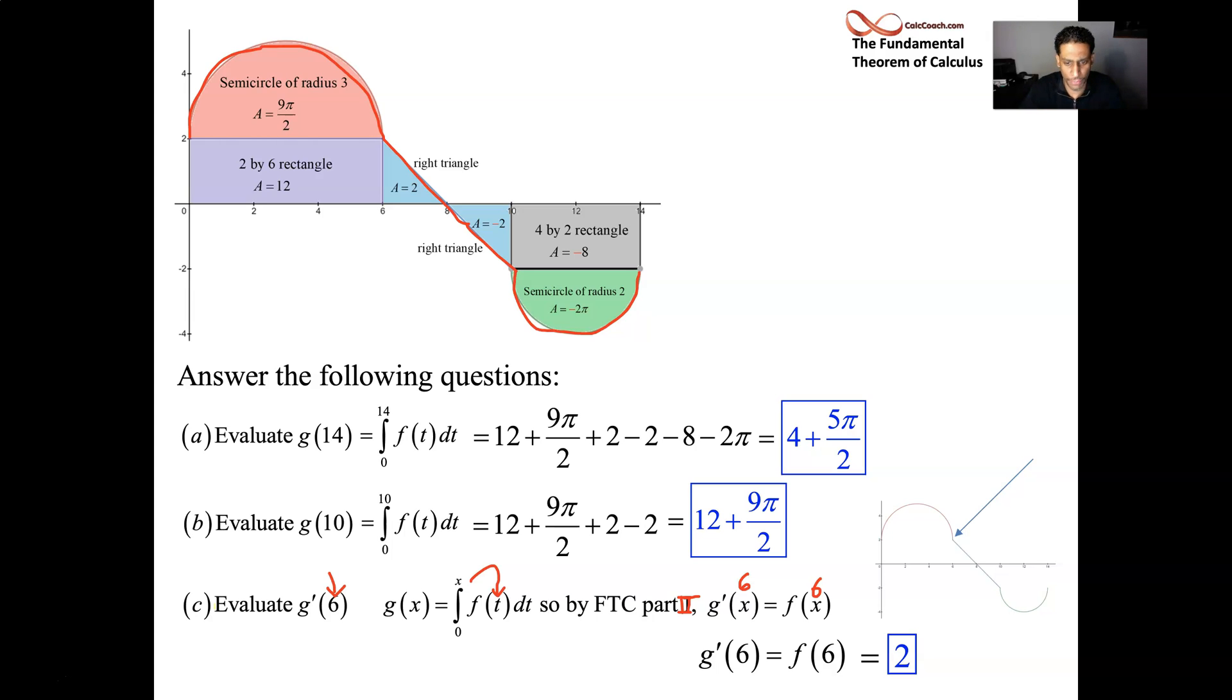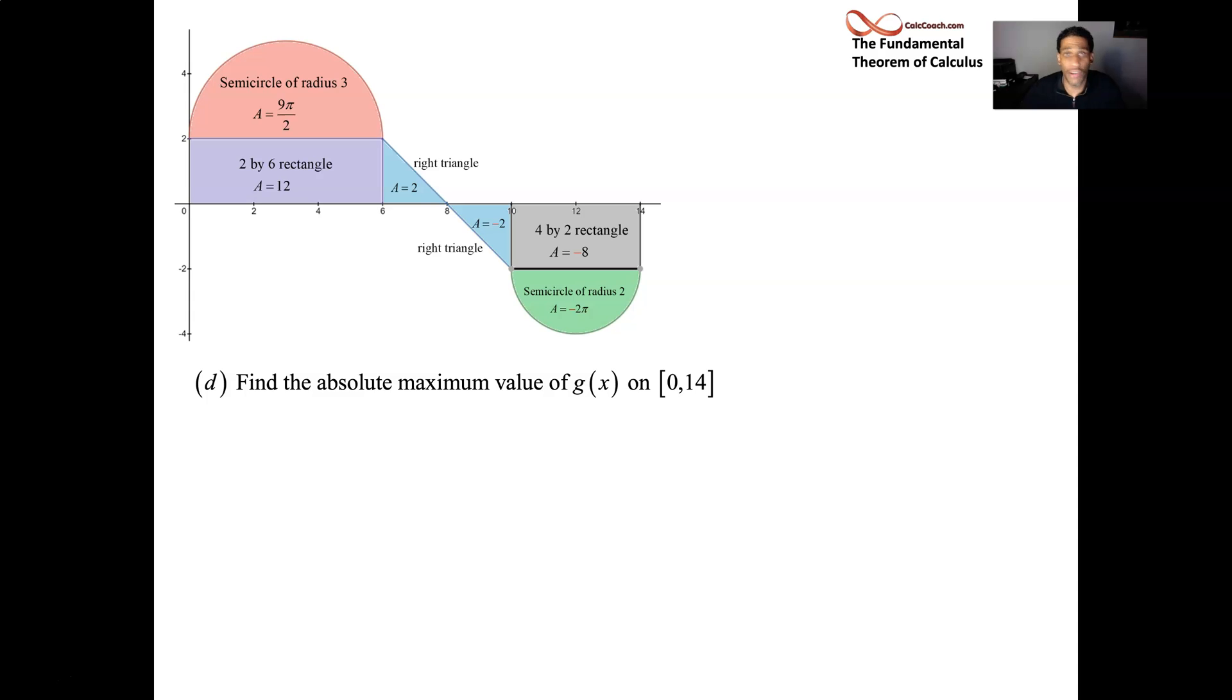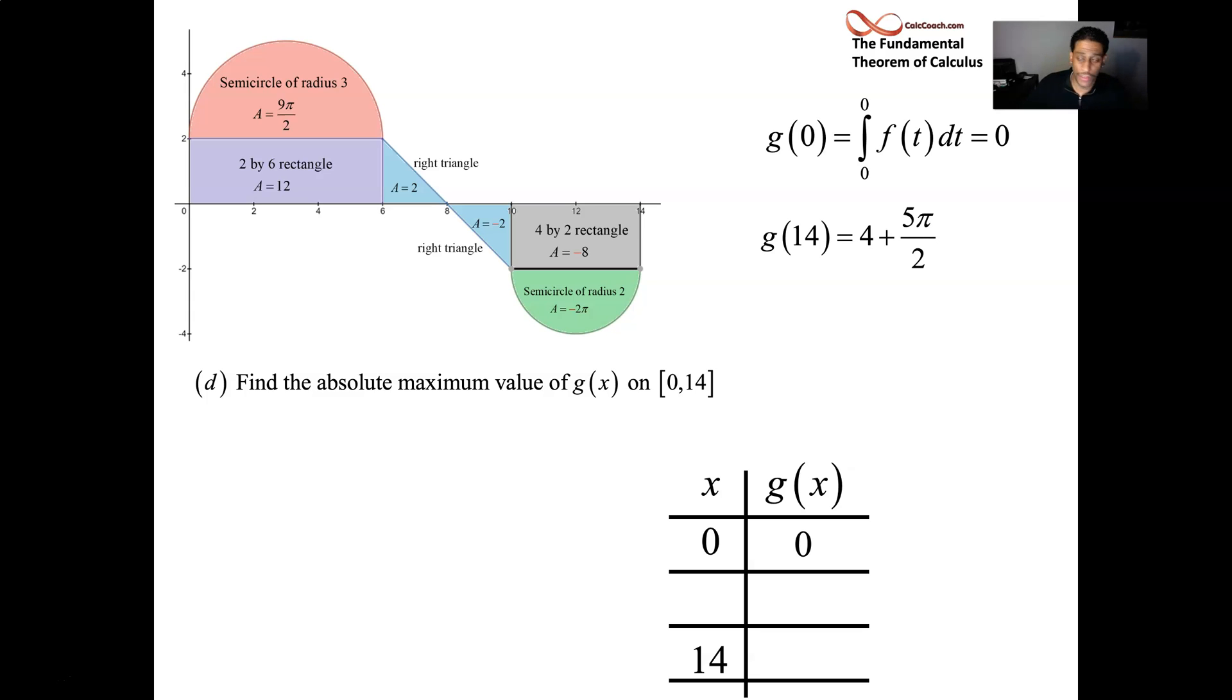I'm going to try to fit in one more question where we want to ask, what is the absolute maximum value of our function g of x? This area accumulating function. Remember how we do absolute maximum value questions. We get a chart. I'm interested in an interval from 0 to 14. So we have 0 in there. We have 14 in there. We'll go ahead and evaluate these right now. What is g of 0? It's the integral from 0 to 0. That's going to be 0. Whenever the bounds match, there's no area there. And we did g of 14 already. That was our first question letter A. So that's 4 plus 5 pi over 2. So we're trying to find the absolute maximum value. You plug in the endpoints and then you search for critical points that happen in between those endpoints.